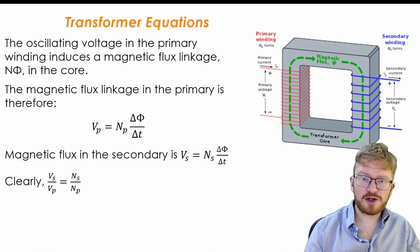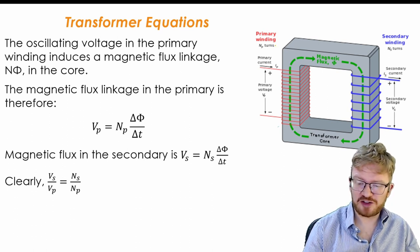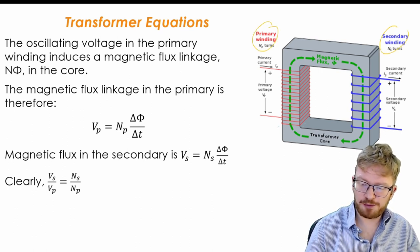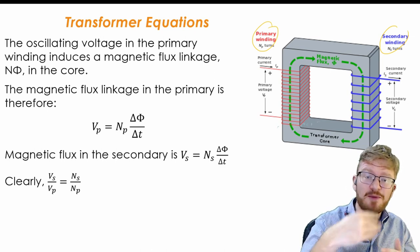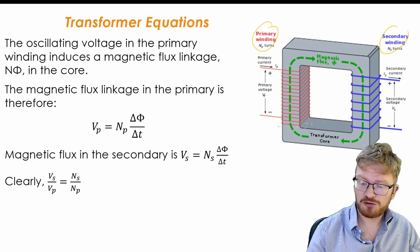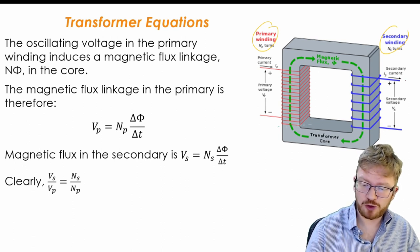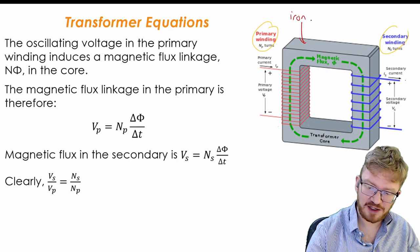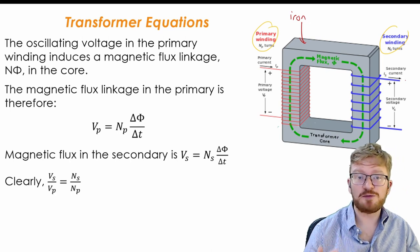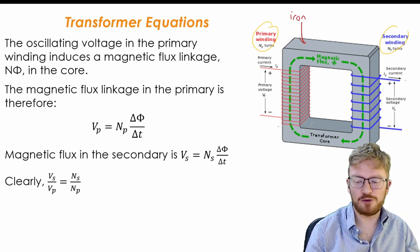So basic way a transformer works, hopefully you're going to remember this from IGCSE. We have on there a primary side and a secondary side, or sometimes we call them windings because they're made of coils of wire wrapped around a transformer core. Now the transformer core must be made of iron because iron is magnetic, so it will allow a magnetic field to go through it.